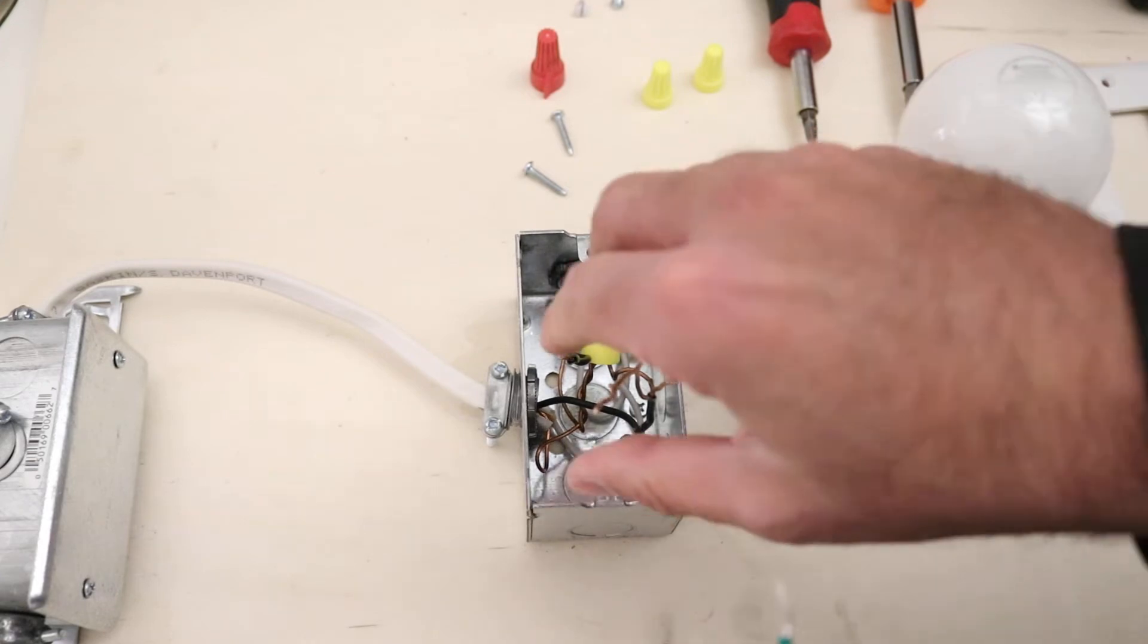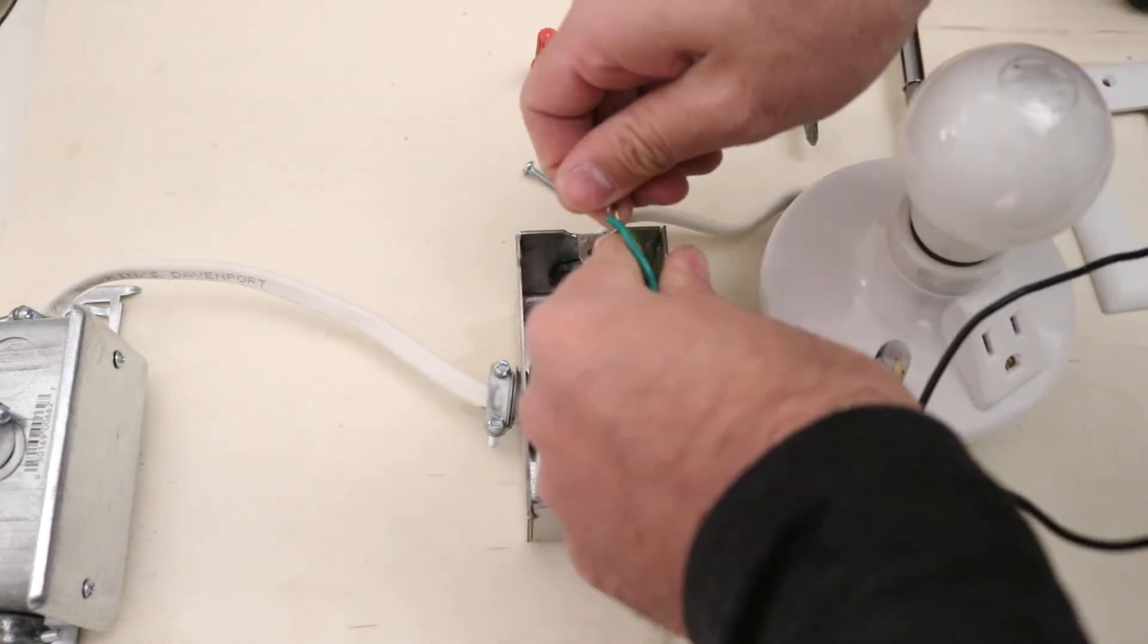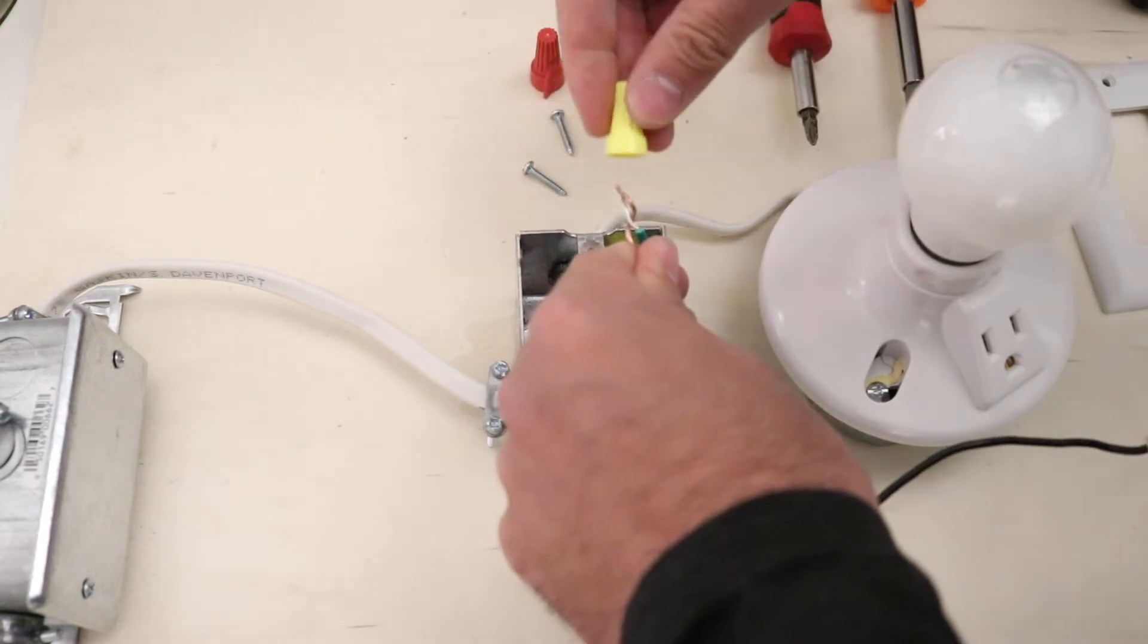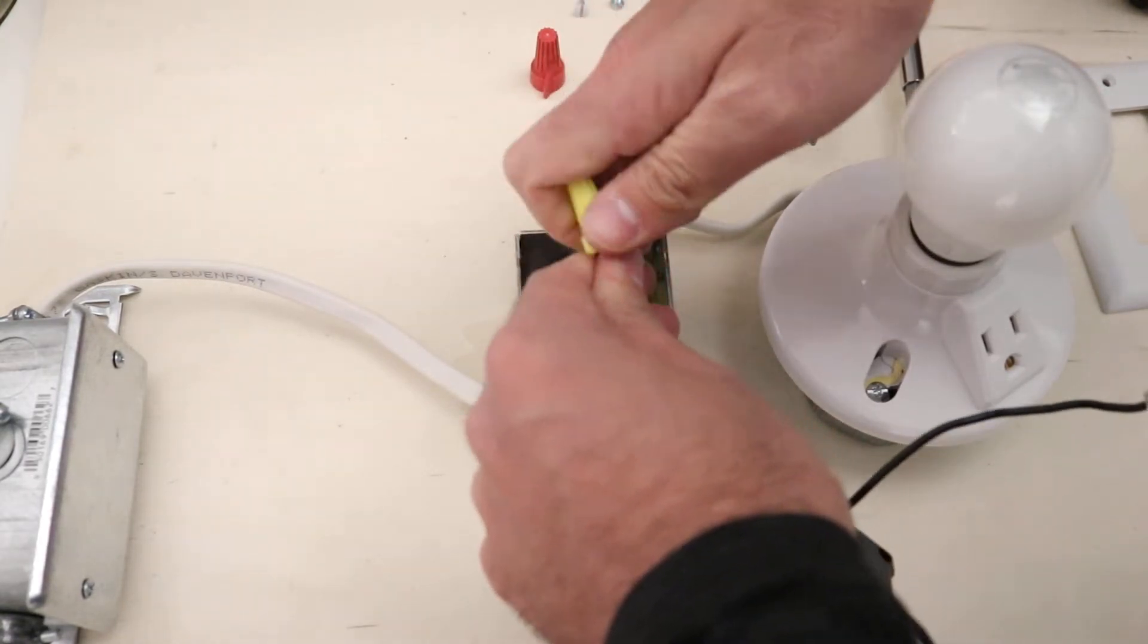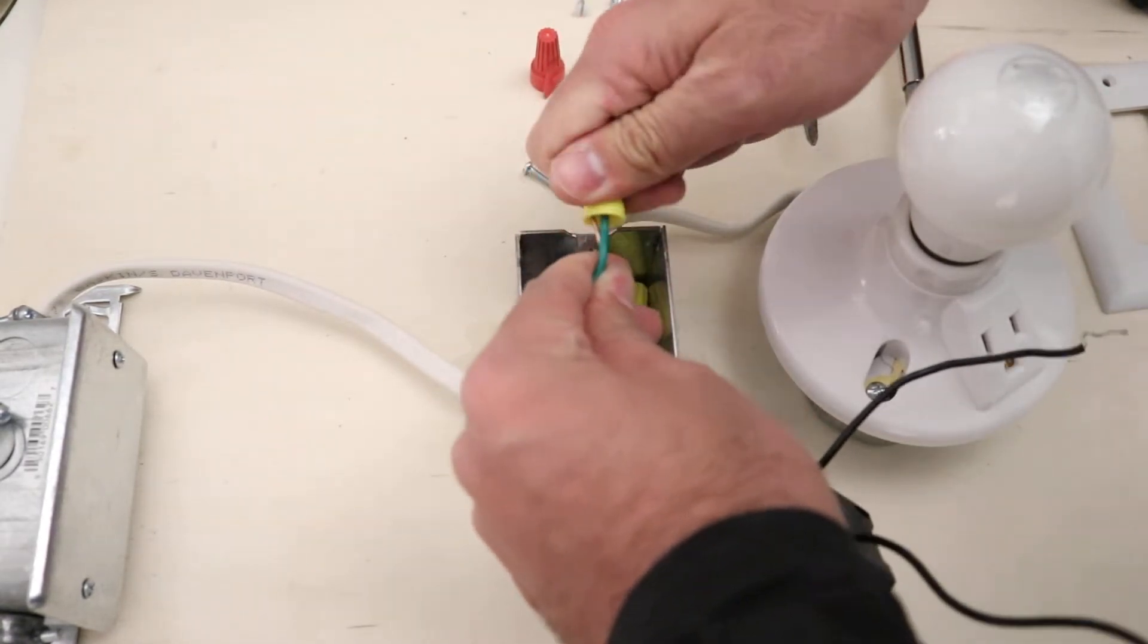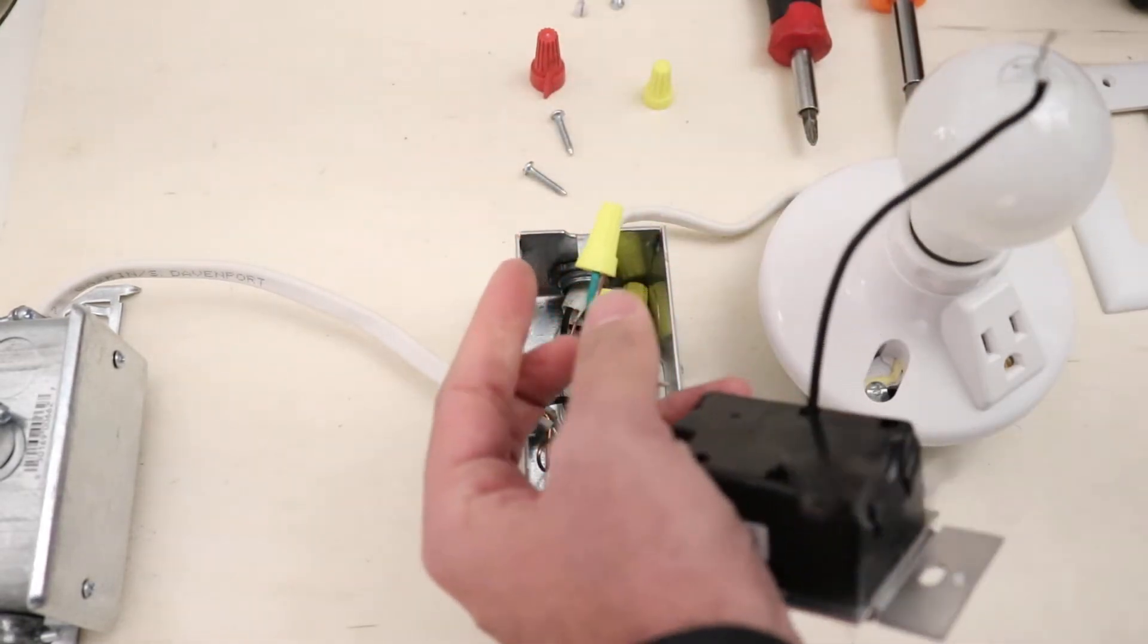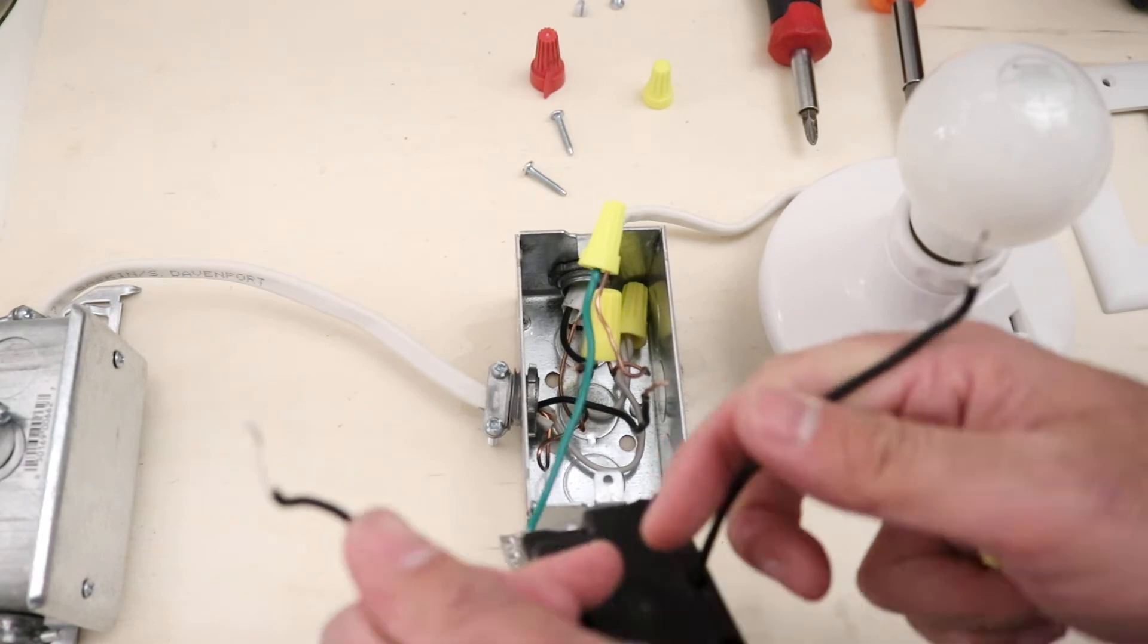So usually I start with the ground wire, but you can start with whatever wire works best for you. I'm going to go ahead and put the wire nut on top here. Screw until I feel the wires twisting together. I can feel some resistance and that they've twisted together there so we are all set with the ground wire.